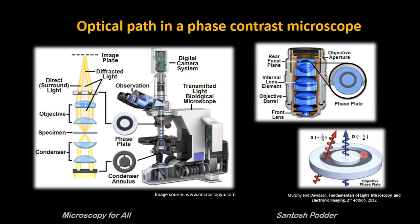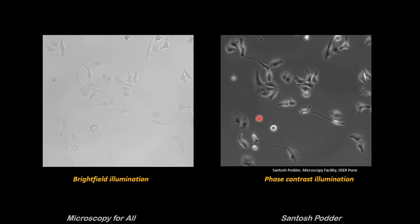Since our eyes interpret differences in intensity as contrast, we can now see the object in the microscope. Here is a comparison of living human A549 cells in culture imaged in bright field versus phase contrast illumination. Cellular objects having a higher refractive index than the surrounding media appear dark, and the cellular attachments and some internal structures are quite clear. The contrast increases dramatically in comparison to bright field illumination.